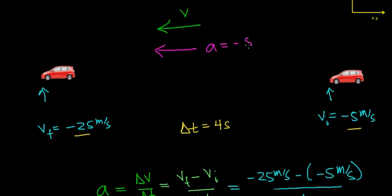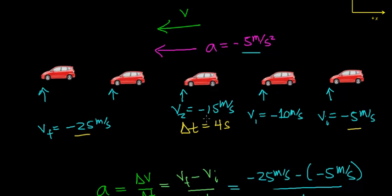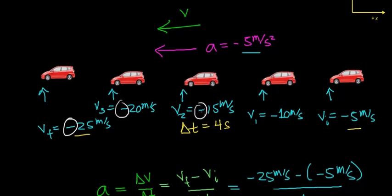If our acceleration is negative 5 meters per second squared, then every second the car's velocity is going to increase by 5 meters per second in the negative direction. After one second, velocity goes from negative 5 to negative 10 meters per second. After another second, from negative 10 to negative 15. Then from negative 15 to negative 20, and finally from negative 20 to negative 25 meters per second. Notice that in each case, both the velocity and acceleration are negative numbers — when their signs are the same, the velocity increases.